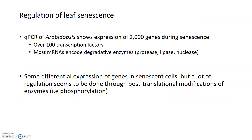In terms of what regulates this whole process — particularly the programmed part of senescence — quantitative PCR studies of Arabidopsis leaves show expression of 2,000 different genes during senescence, over 100 of which are transcription factors that change expression. These mostly regulate degradative enzymes: proteases that degrade proteins, lipases that degrade membrane lipids, and nucleases that degrade nucleic acids. There is a ton of regulation and a ton of genes involved in this process.